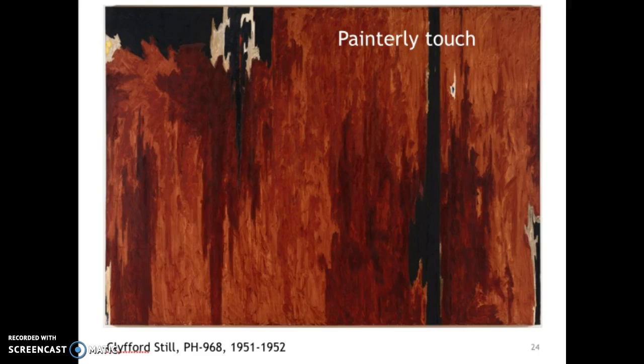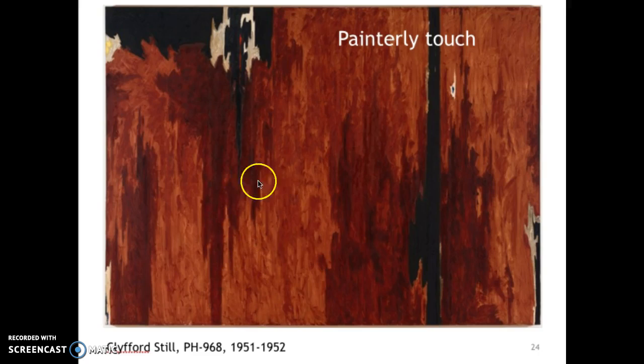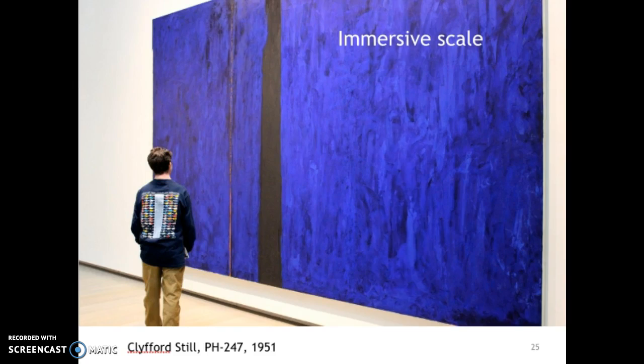Additionally, abstract expressionists show evidence of their process in their paintings. The paintings feature a painterly touch, and in Clifford Still's work here you can really see how he was applying paint to the canvas with a palette knife — there are these scratchy, very textural swatches of paint. Abstract expressionist paintings are also enormous; they're immersive in scale. You can see here another one of Clifford Still's paintings, and this figure next to it shows those paintings are about 16 feet long and quite tall.